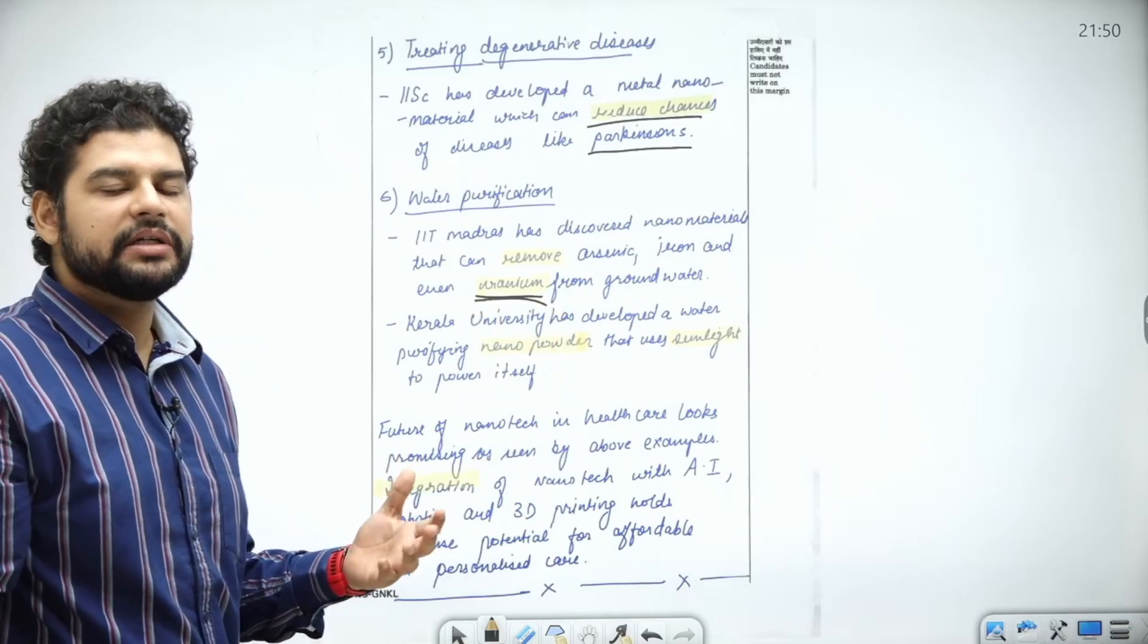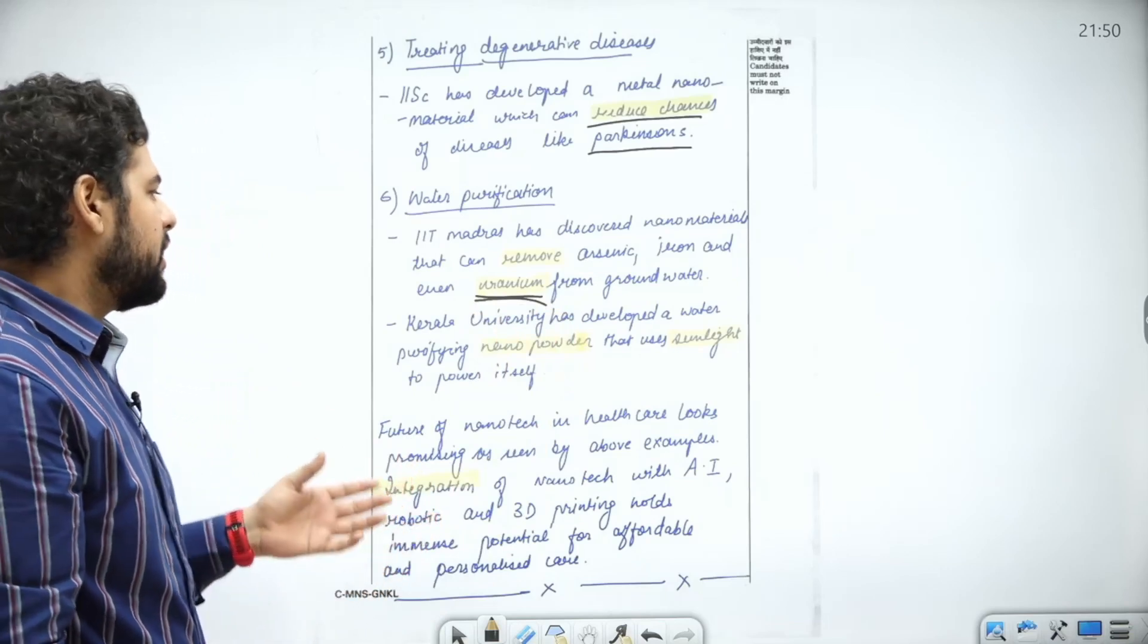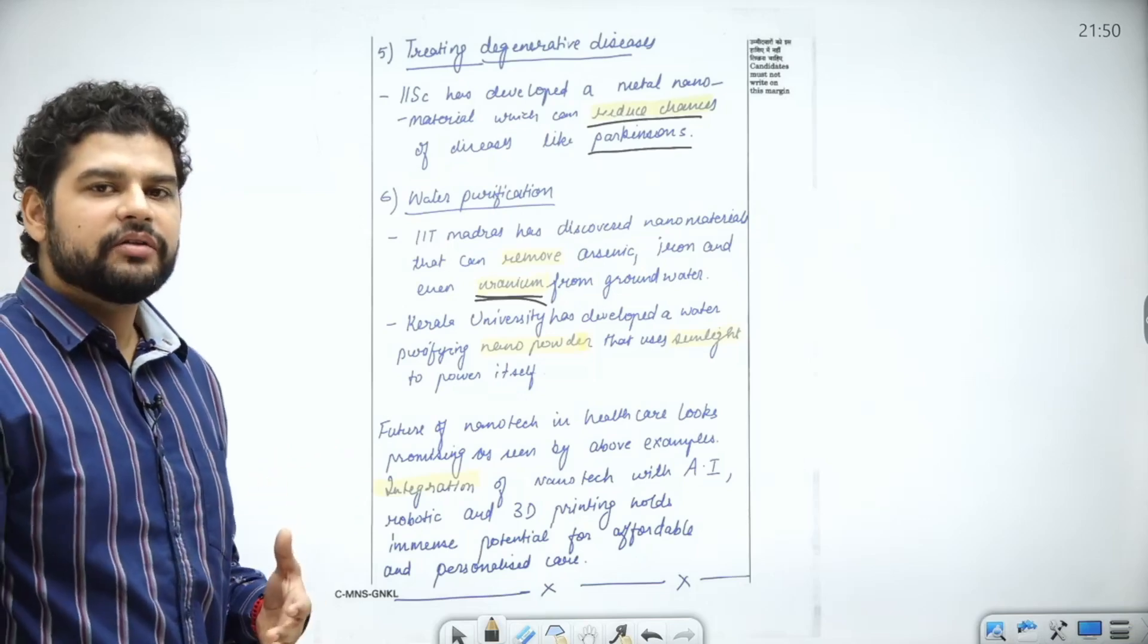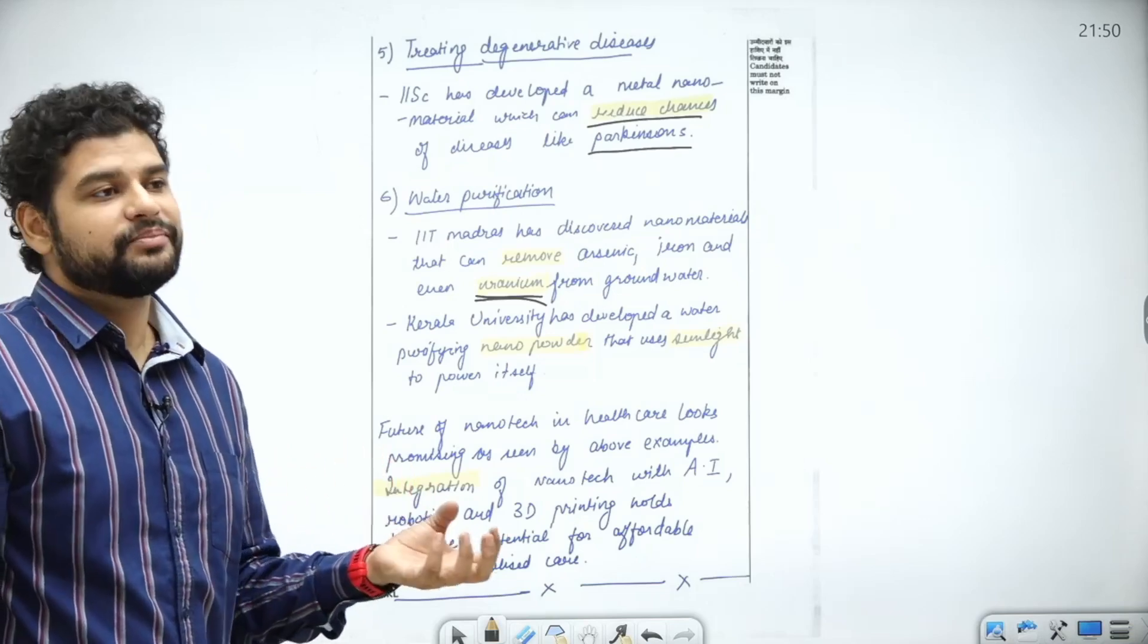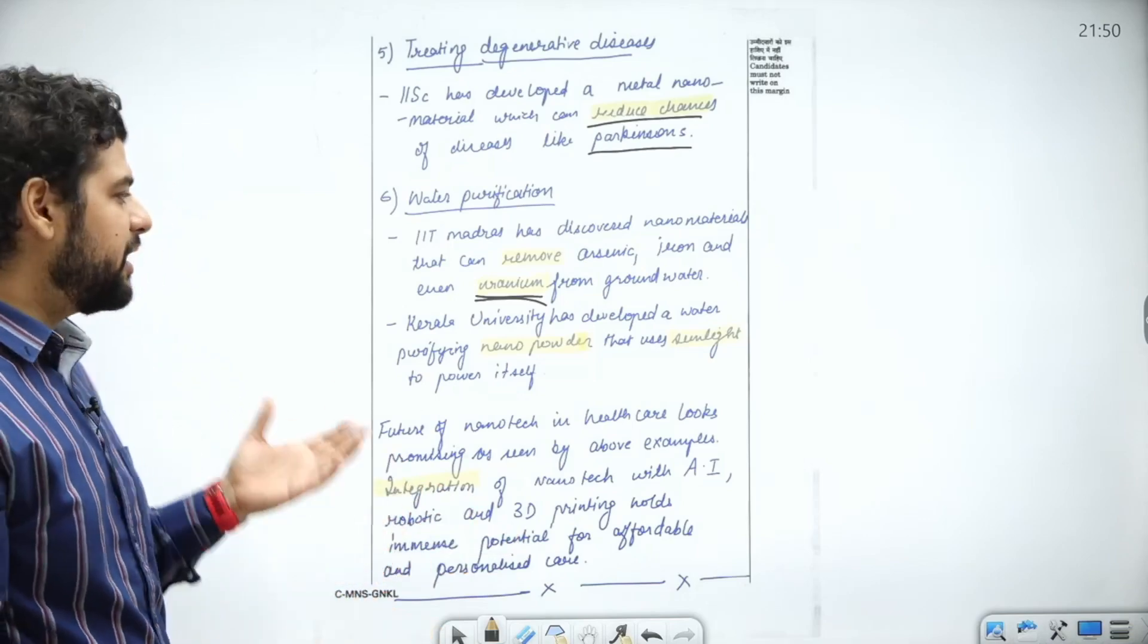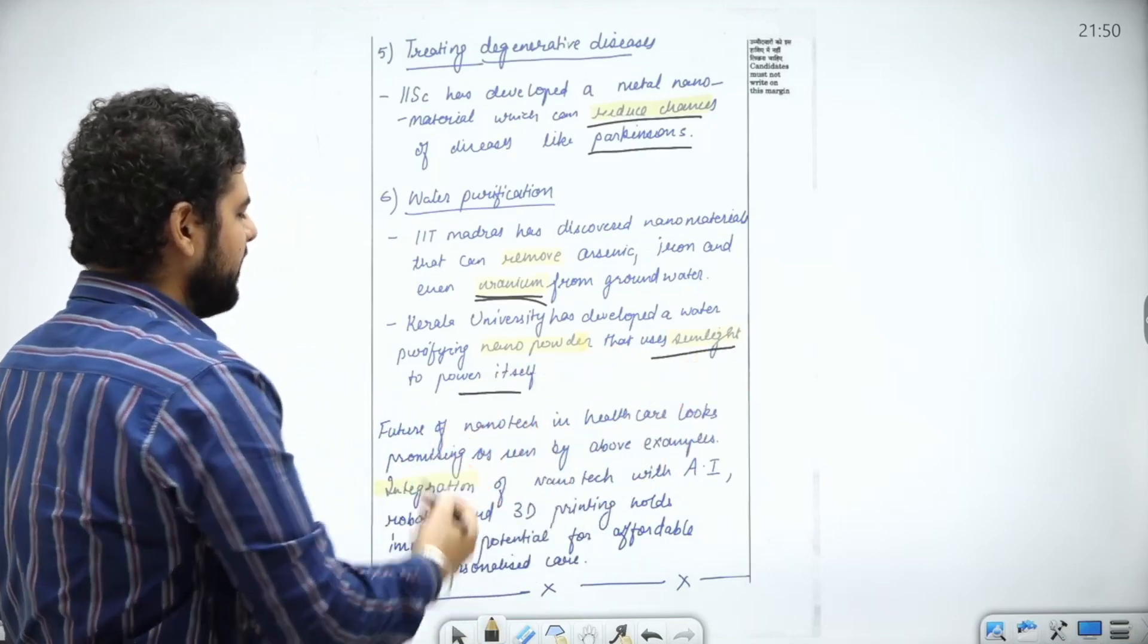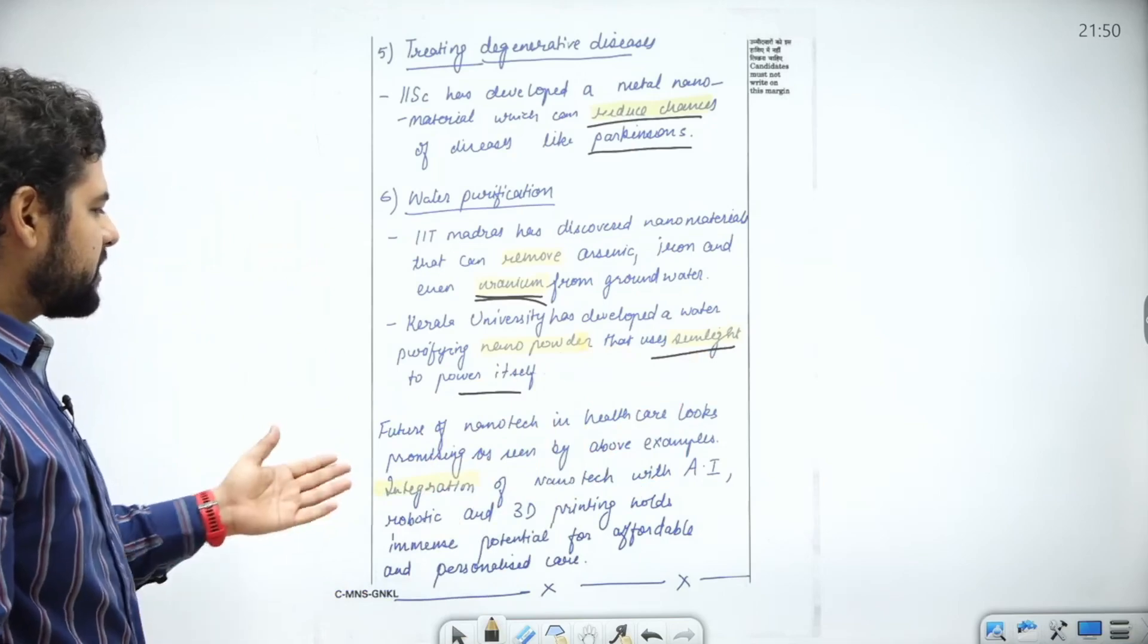This is very important because arsenic poisoning is prevalent in our country. Kerala University has developed a water purifying nanopowder which can provide itself the electricity from sunlight. Brilliant thing. It can use sunlight to power itself.